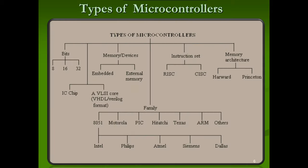Types of microcontrollers: they can be classified by bit width — 8-bit, 16-bit, or 32-bit. They can be an IC chip or VLSI core, implemented in VHDL or other formats. With respect to memory, they can have embedded or external memory. By family, there are many types: 8051, Motorola, PIC, Hitachi, Texas Instruments, ARM, and others.